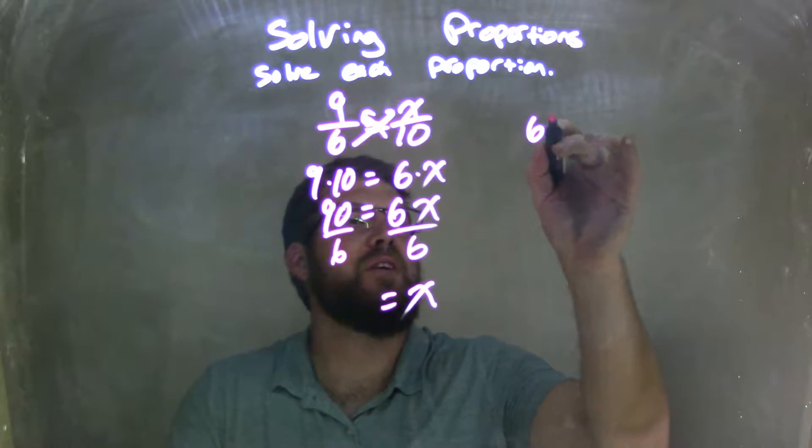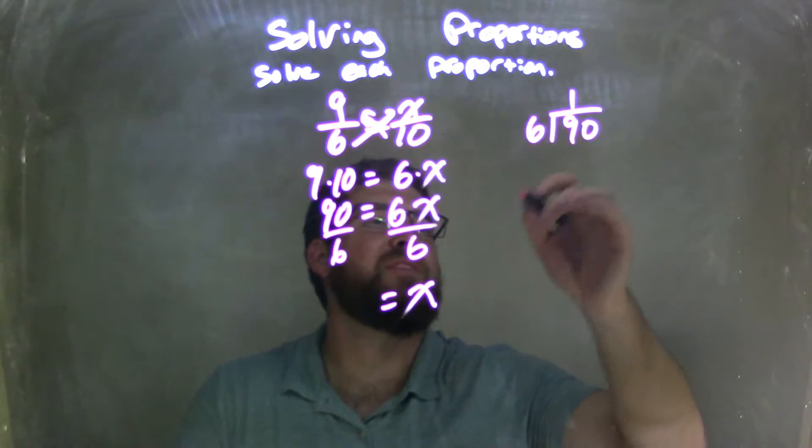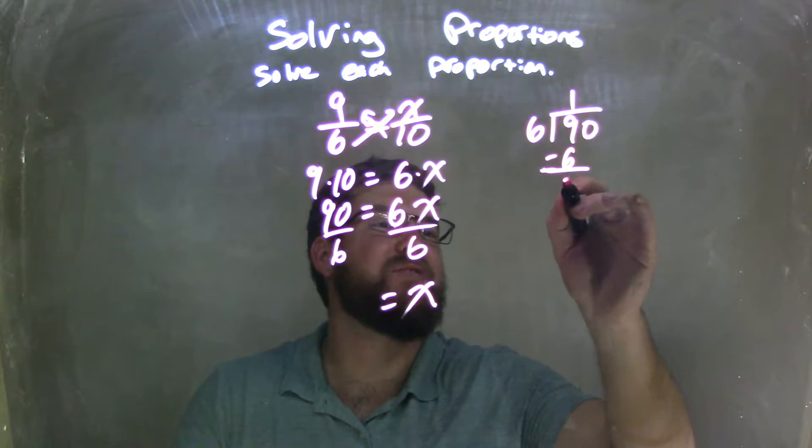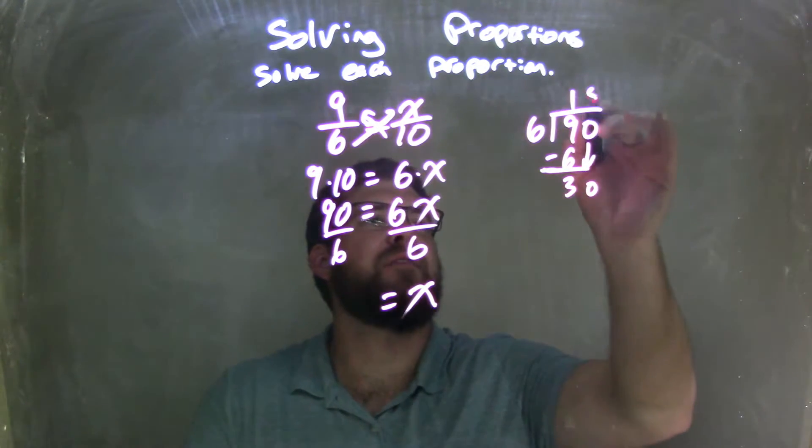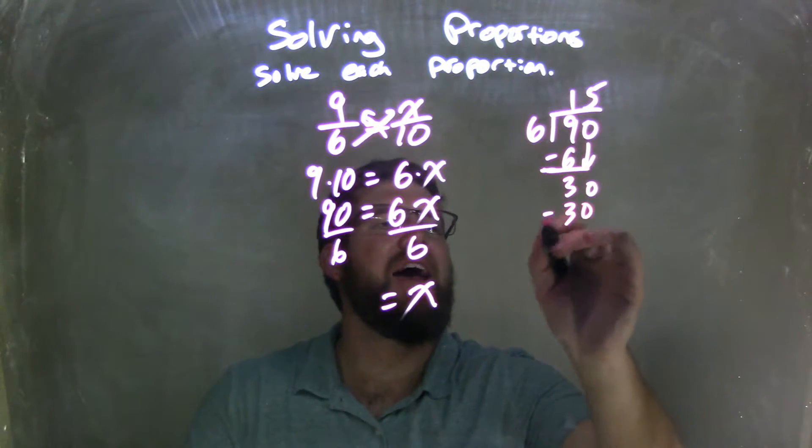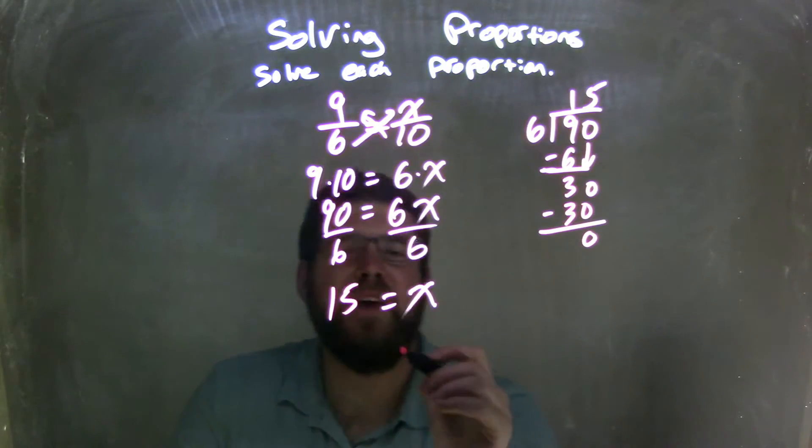So how many times does 6 go into 90? Well, 6 goes into 9 one time. 1 times 6 is 6. We subtract them. 9 minus 6 is 3. We bring down the 0. 6 goes into 30 five times. 5 times 6 is 30. And we're done. They cancel. 30 minus 30 is 0. And so x is 15.